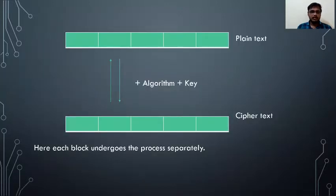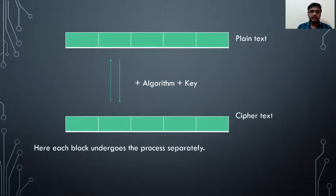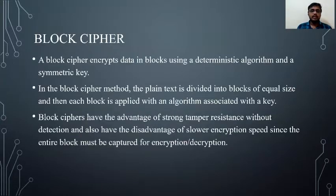You can observe the image here. The plain text is divided into different blocks. After dividing, they undergo an algorithm using a key and are turned into ciphertext blocks. Every block must undergo the algorithm separately. Due to this, the time taken to calculate the whole process is more. Therefore, the disadvantage of block cipher is slower encryption speed, and the main advantage is strong tamper resistance without any detection.